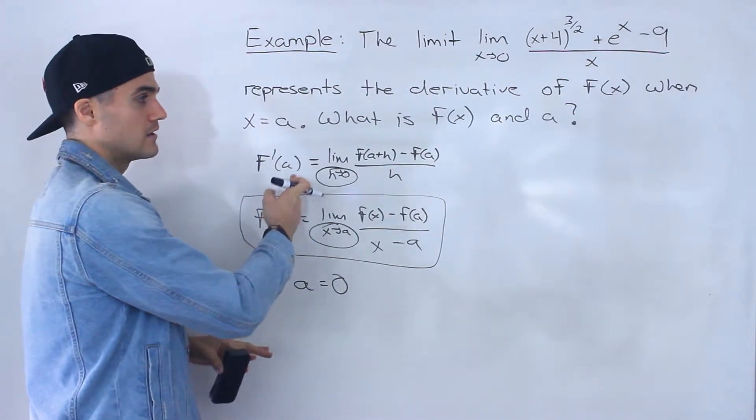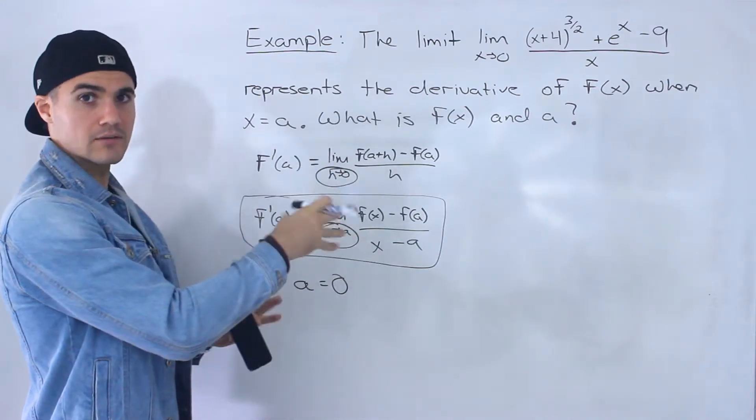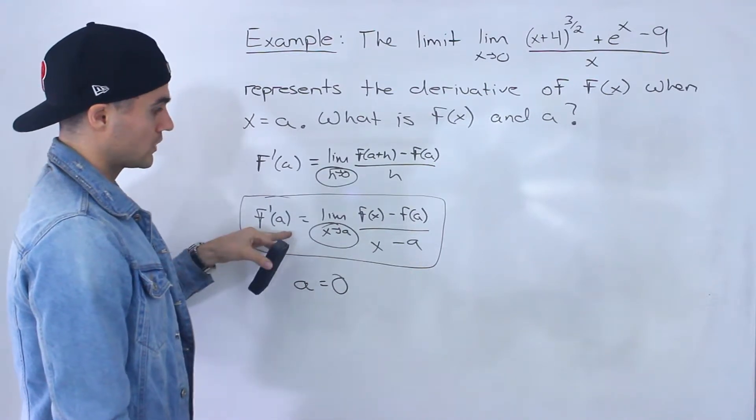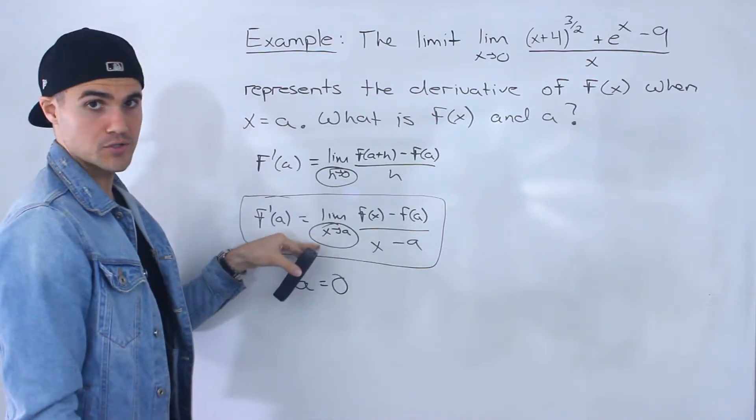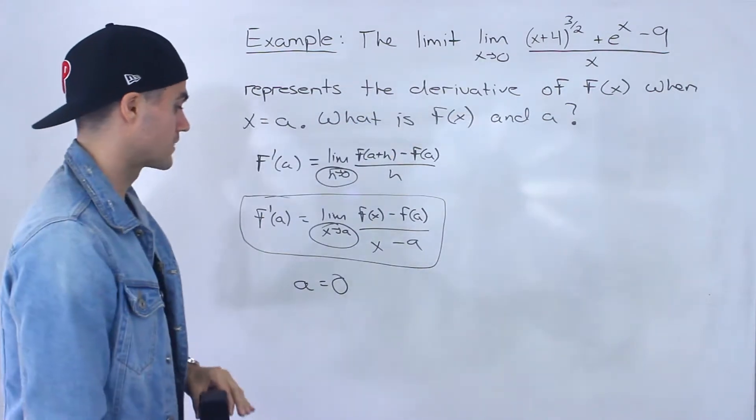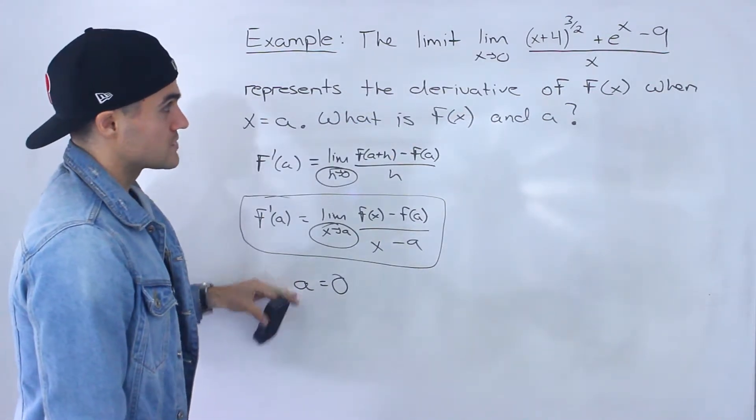Now if it was in this format, that a value would be a little tougher to find, and I've gone over examples like that before. But if you're working with this definition, that a value is pretty easy to find. It's just going to be right there in the limit. So the a value is 0.